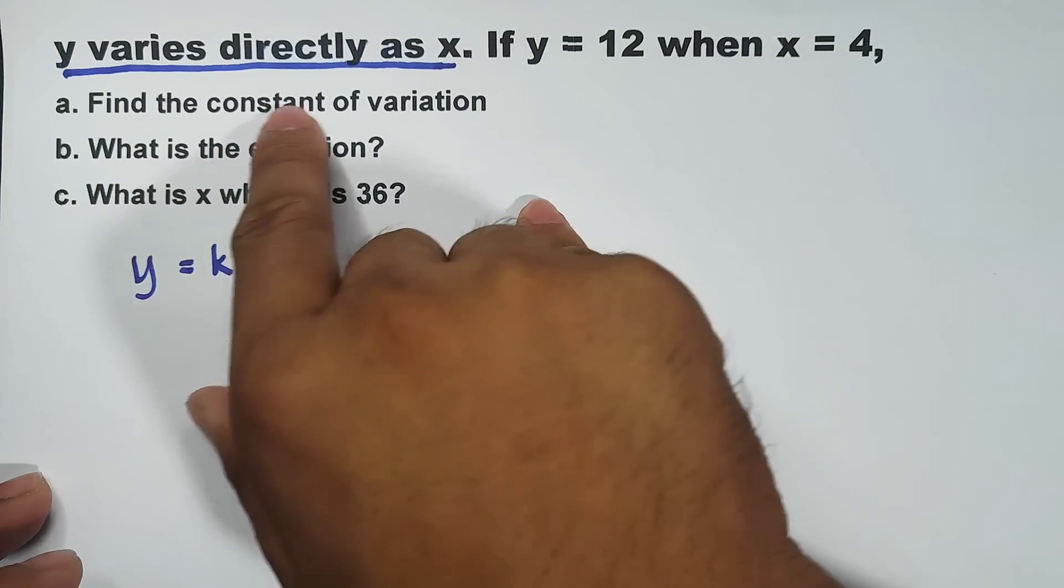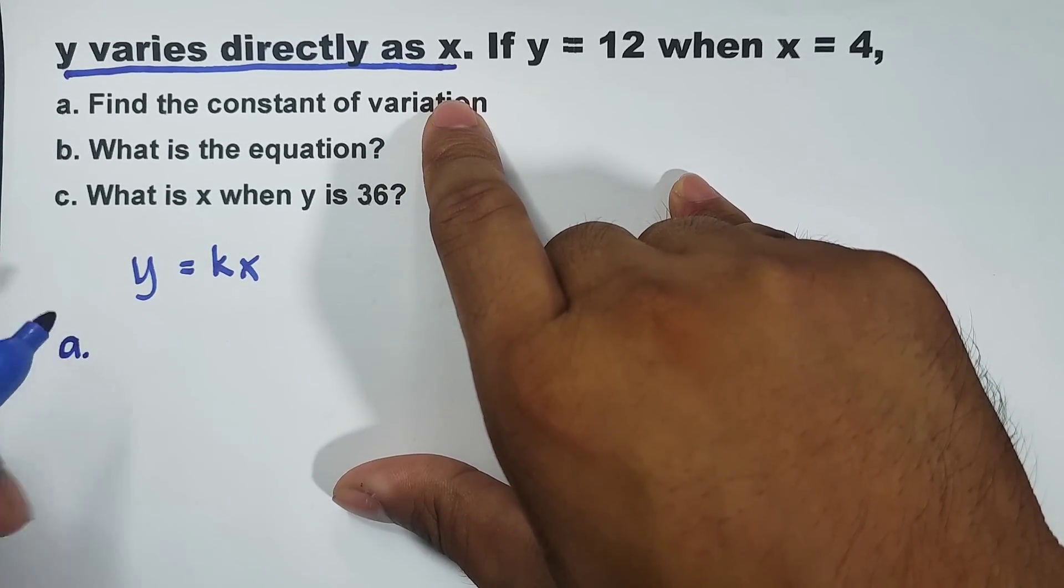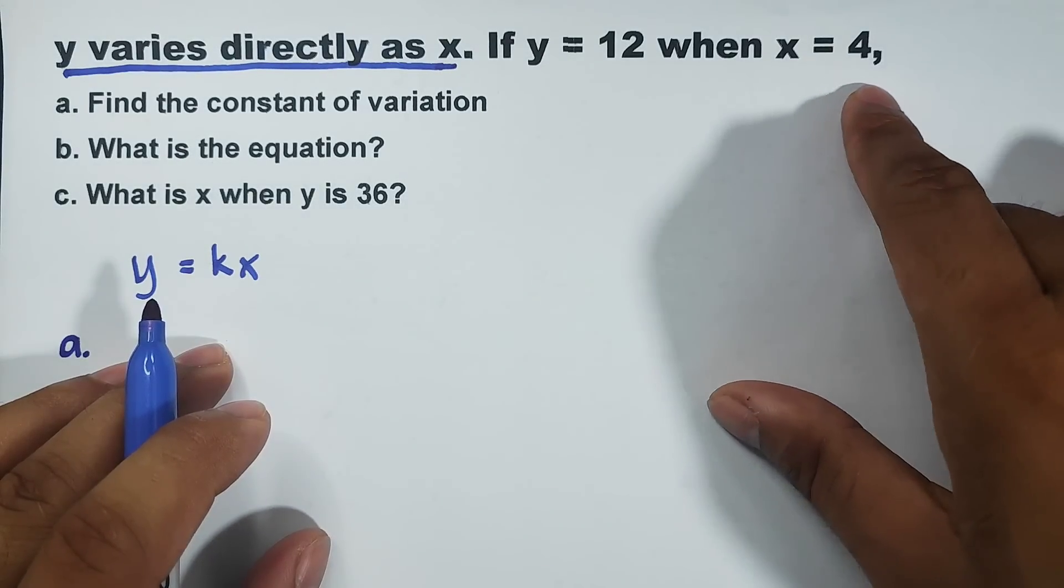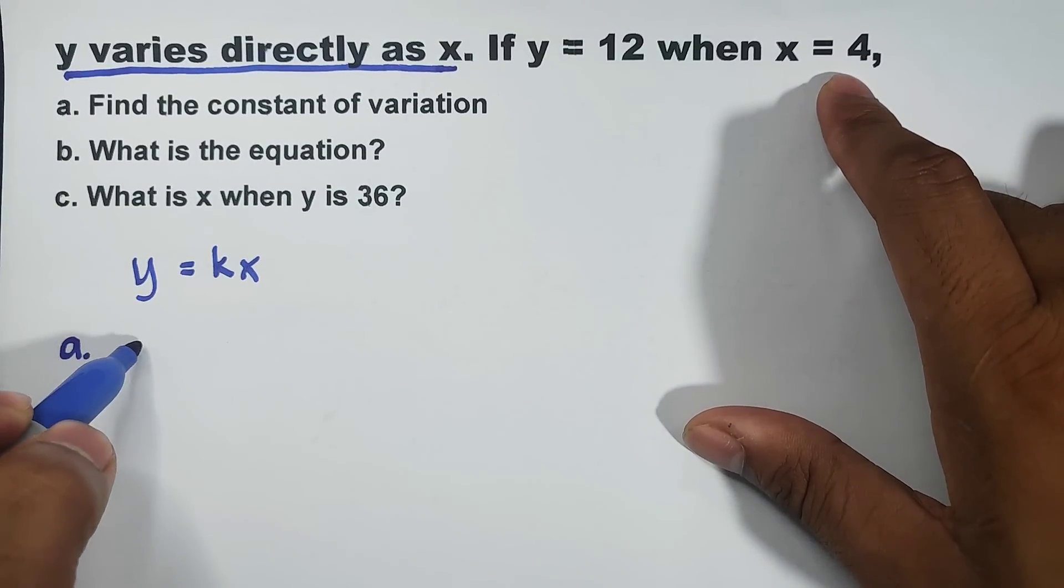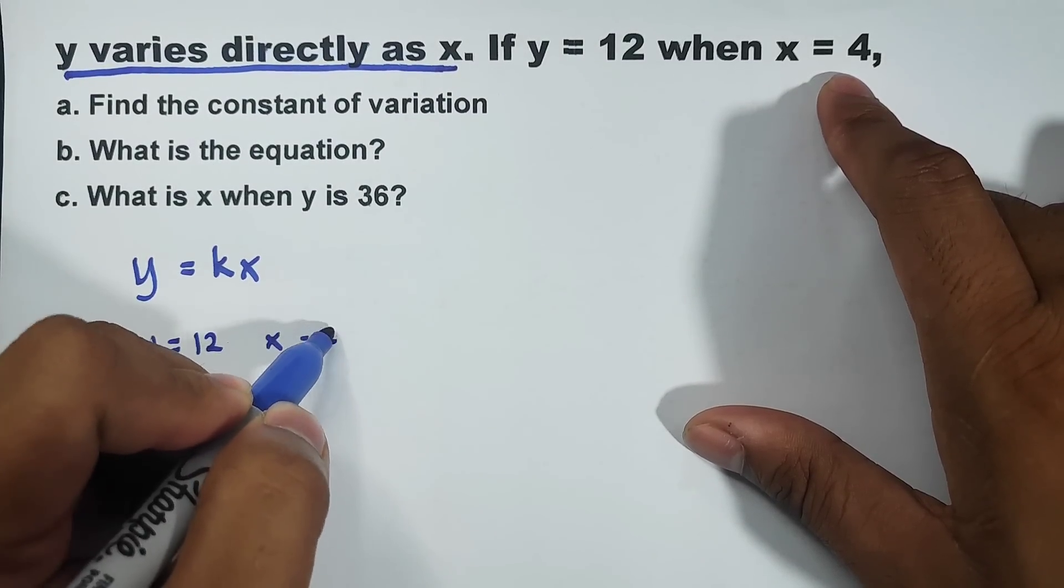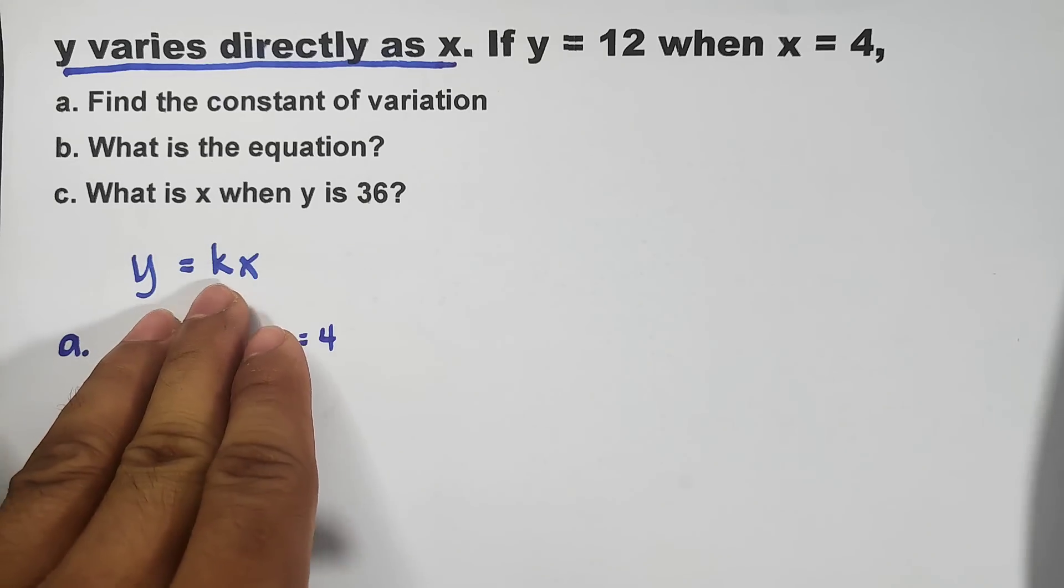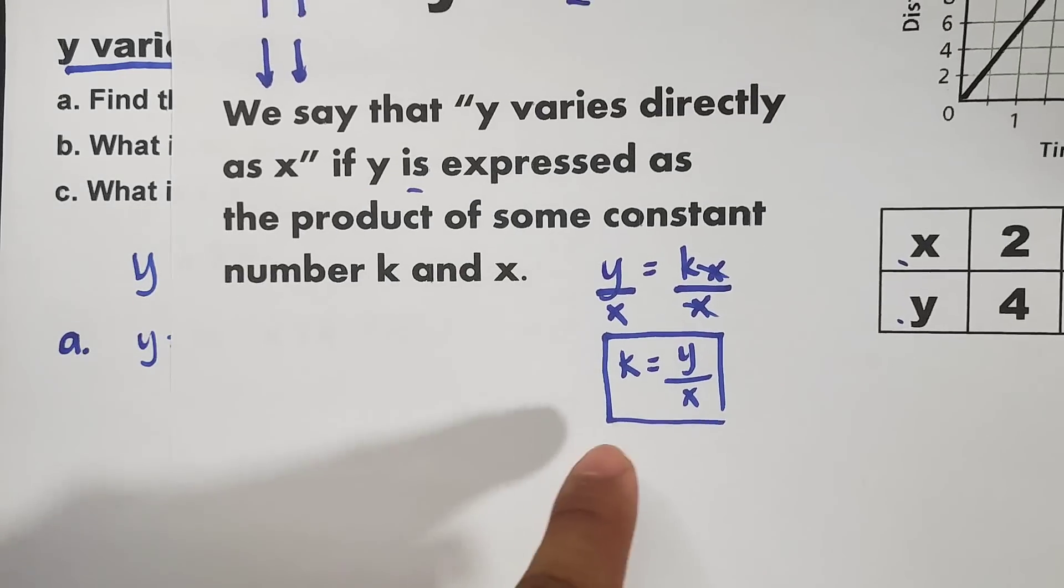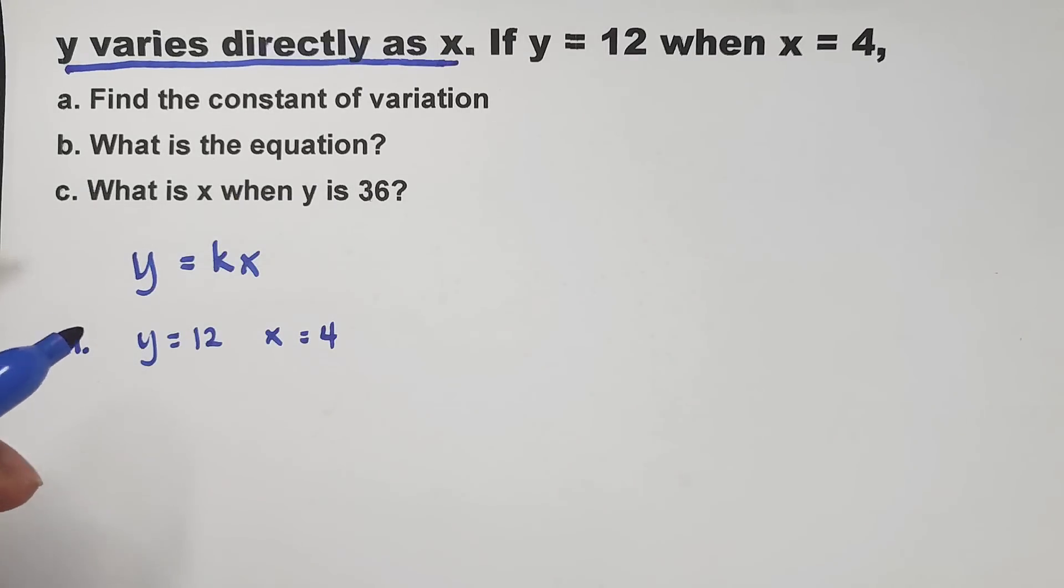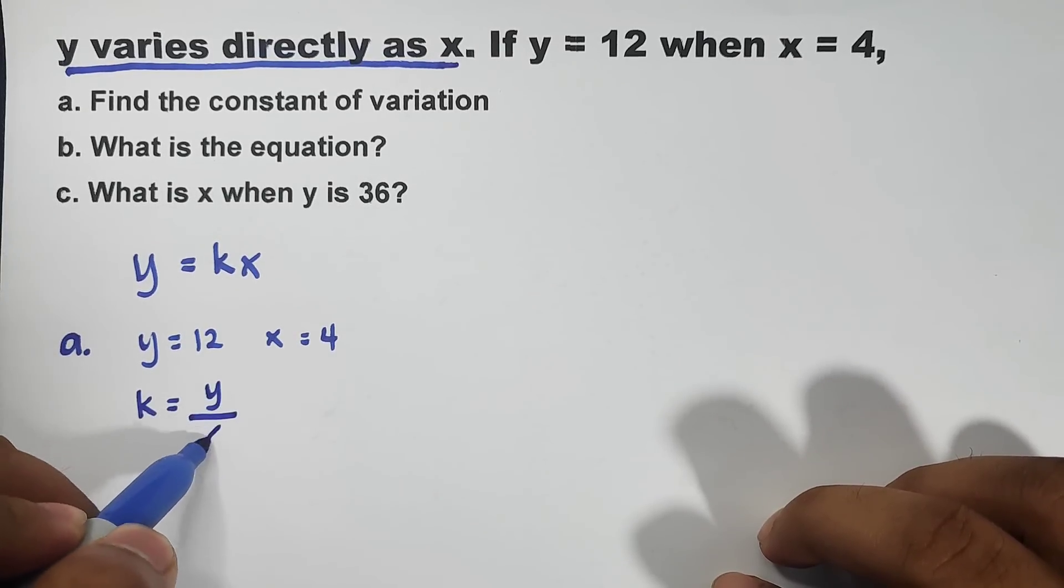Now, find the constant of variation. How are we going to answer letter A? To answer letter A, we'll use this formula. If y equals 12 when x equals 4, so, we have a value of y which is equal to 12, and x equals 4. So, simple lang gagawin nyo. You can directly use this formula and manipulate the equation, or use k equals y over x. So, para mas masanay kayo, let's use this.